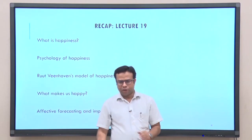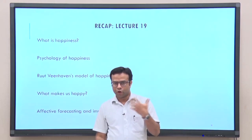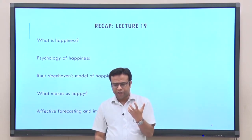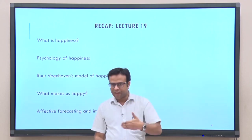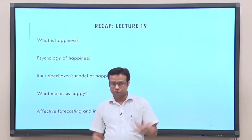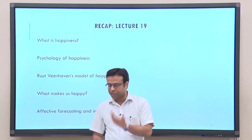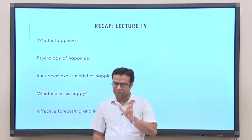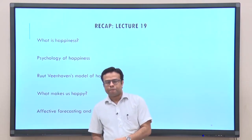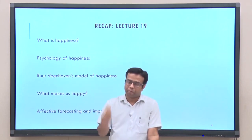We also discussed one particular model of happiness proposed by Ruut Veenhoven, a sociologist who did a lot of research in the scientific study of happiness. He tried to define happiness from the perspective of quality of life and life satisfaction. He proposed four qualities of life: livability of the environment, utility of life, life-ability of the person, and life satisfaction. He particularly equated happiness with the concept of life satisfaction. We also discussed the different types of life satisfactions.